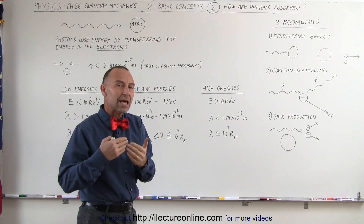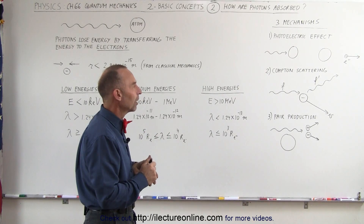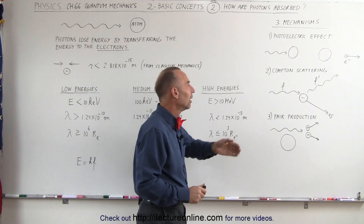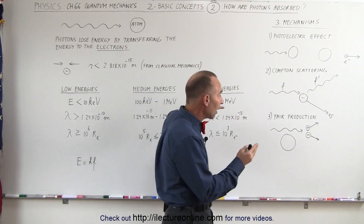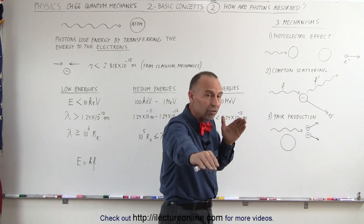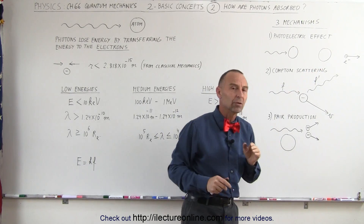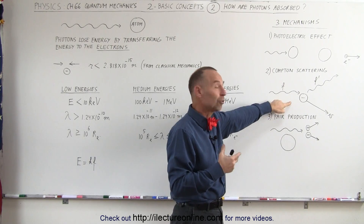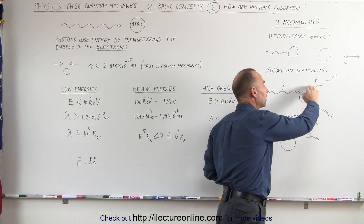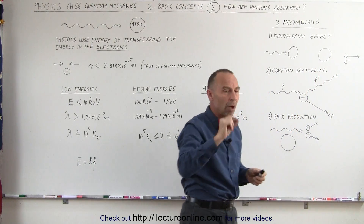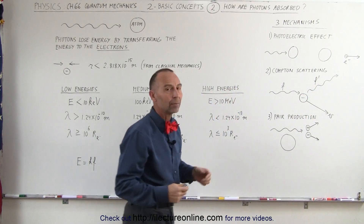Second, as the energy of the photon increases to a medium level, the next kind of energy transfer is what we call Compton scattering. The photon zips past the electron; the electron is pushed in one direction while the photon is deflected in another direction due to conservation of momentum. The energy of the electron that comes off the scattering is smaller than the energy of the incoming photon — that difference in energy transferred to the electron is called Compton scattering.